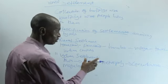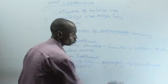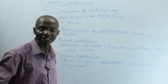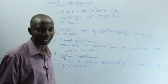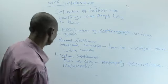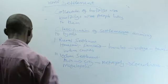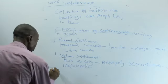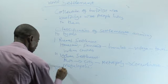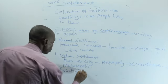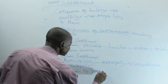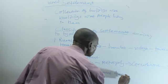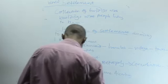They have their own boundary. In terms of conurbation, you have two or three cities coming together, but each city maintains their identity. Then we have megalopolis — that is the coming together of many conurbations. Now let's look at classification of settlement according to shape.